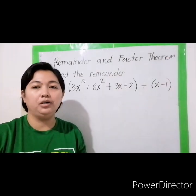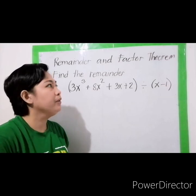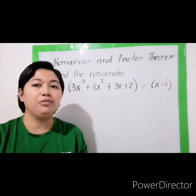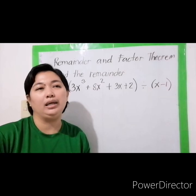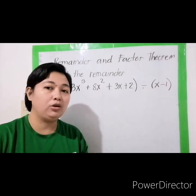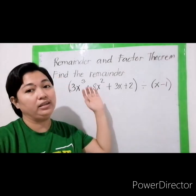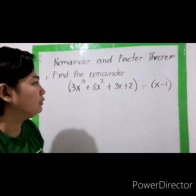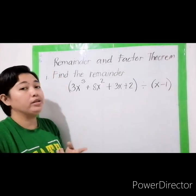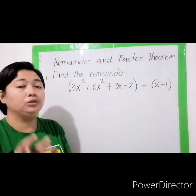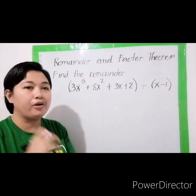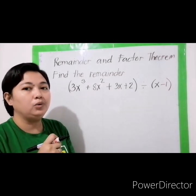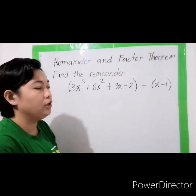Let us now move on to the remainder and factor theorem. In the remainder theorem, we are finding out what the remainder is when a dividend is divided by a divisor. There are two ways to determine the remainder: by using the substitution method and by using synthetic division.